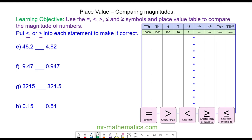For question E we have 48.2 compared to 4.82. And you can see 48.2 is bigger because it has four tens. So this is greater than 4.82.